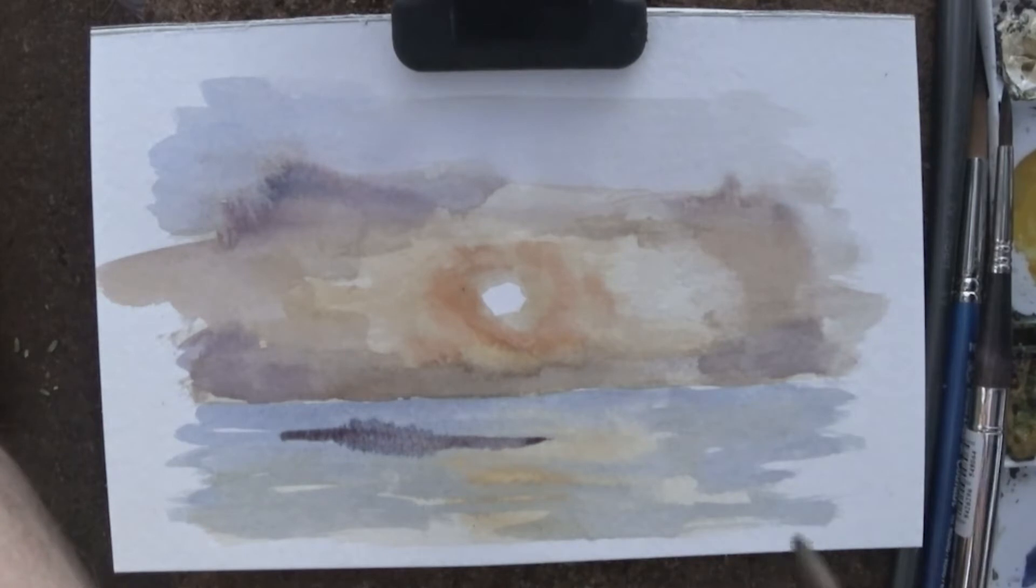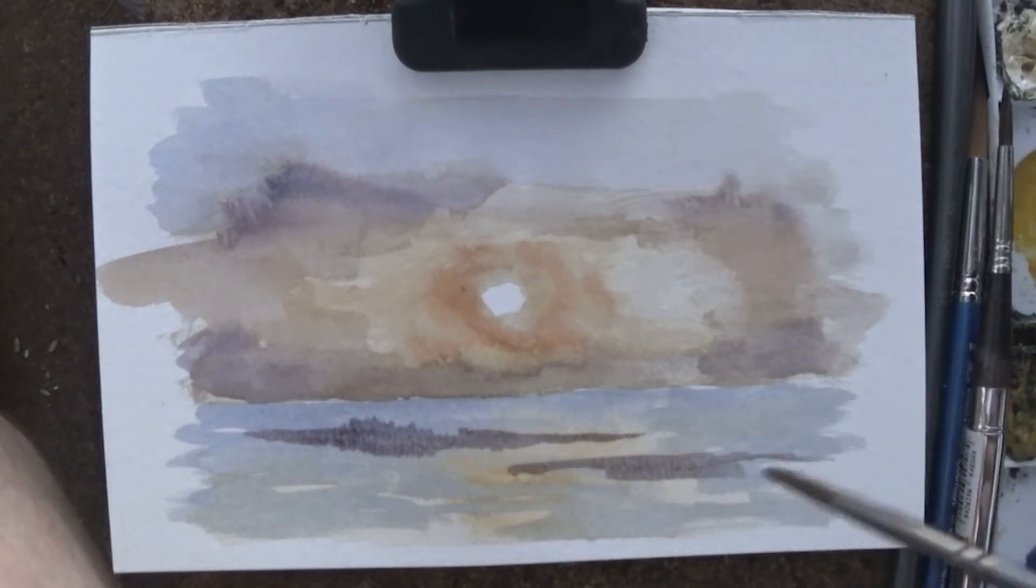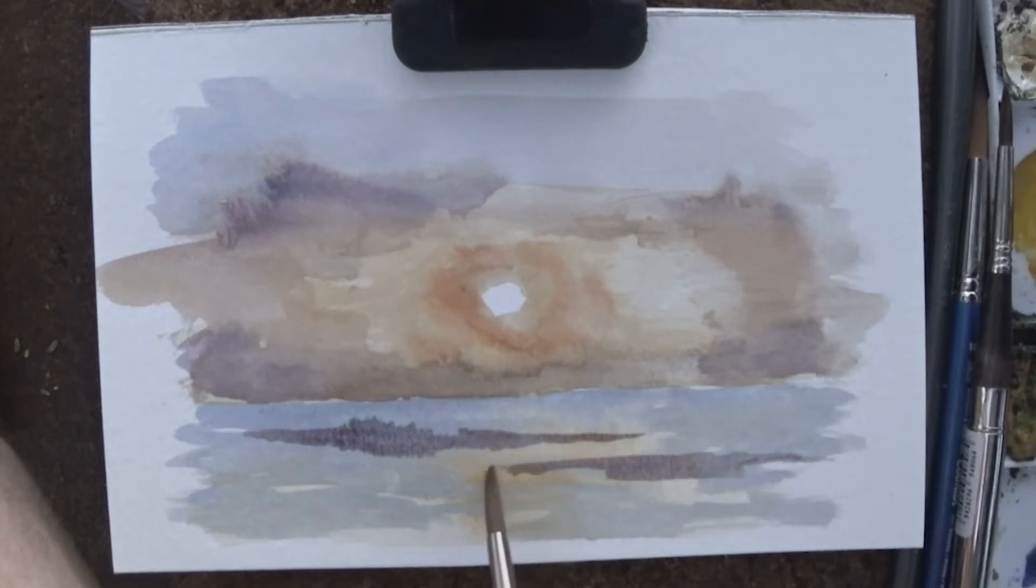I put down the blue of the water and you can see it kind of interacted with that warm color that I had underneath. That's what I was really going for, so now I get these warm reflections and then a little bit of blue of the water reflecting the sky.